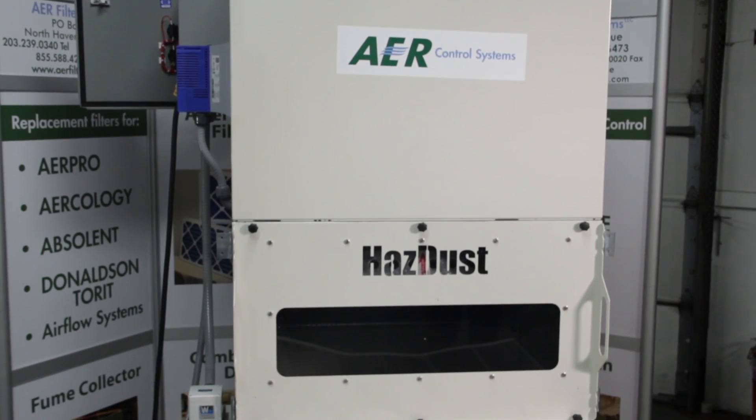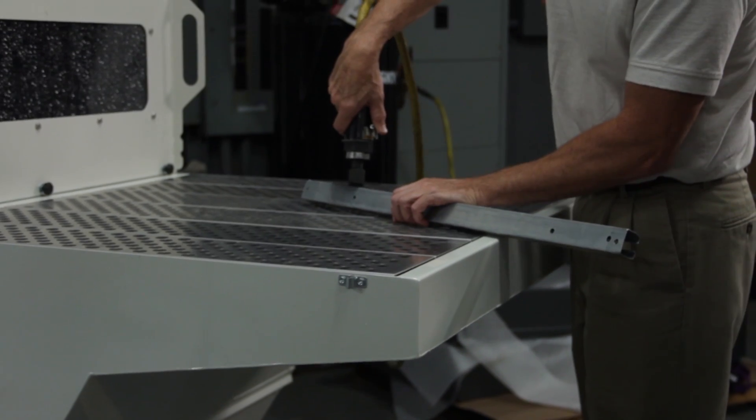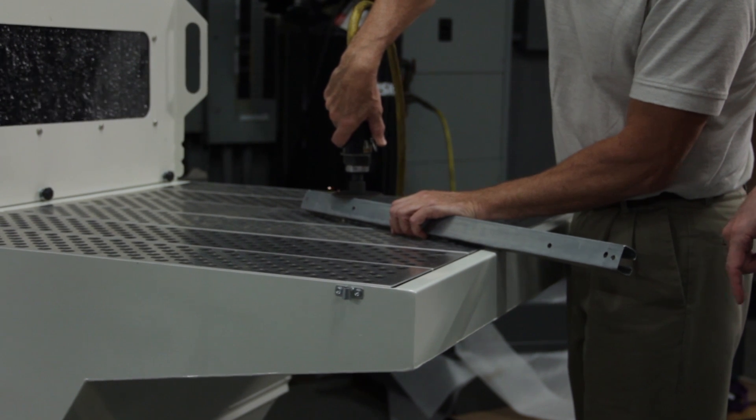The purpose of the HAZDUS series is to remove and filter airborne flammable metal dust from the air. Examples are deburring and grinding of aluminum, titanium, or magnesium parts.